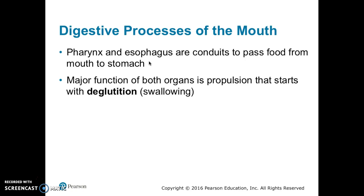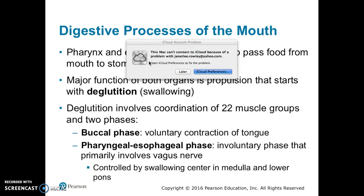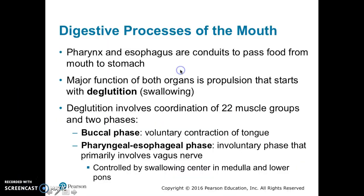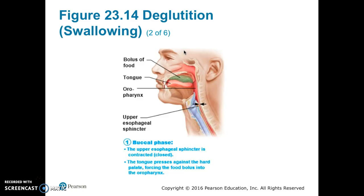Digestion begins in the mouth; the pharynx and esophagus are conduits to pass food from the mouth to the stomach. The major function of both is propulsion, which starts with deglutition, or swallowing. Deglutition involves the coordination of 22 muscle groups and two phases: the buccal phase, which is the voluntary contraction of the tongue, and the pharyngeal-esophageal phase, which is involuntary and primarily involves the vagus nerve. The pharyngeal-esophageal phase is controlled by the swallowing center in the medulla and the lower pons.